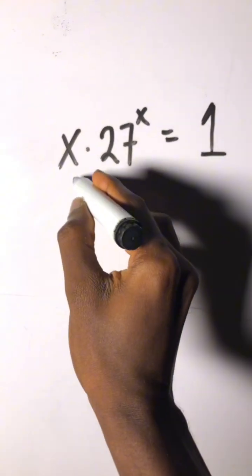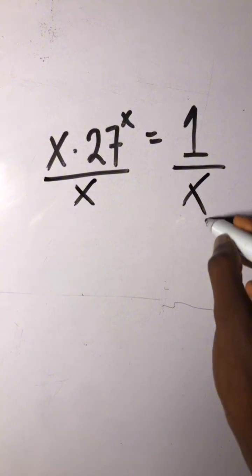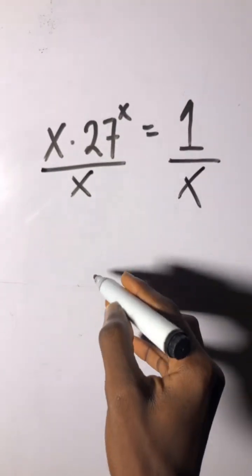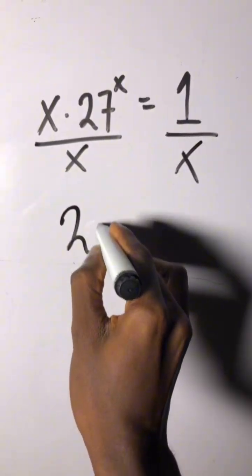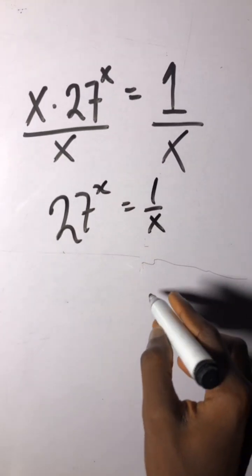So first thing is you divide on both sides by x. x takes away x and this is 27 to the power of x equals 1 over x.